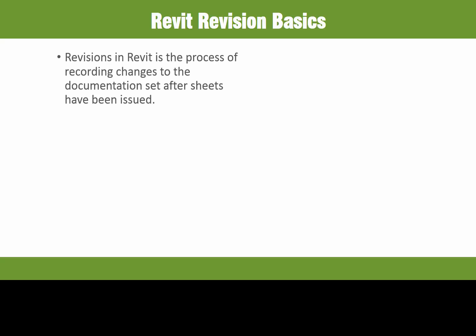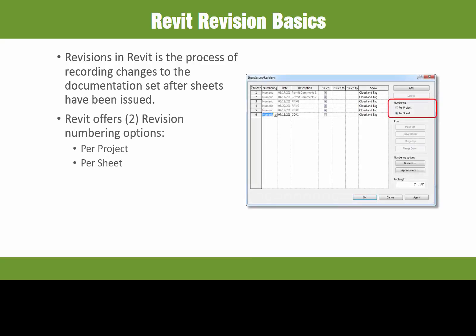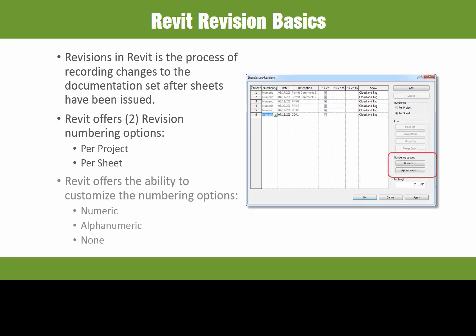Revisions in Revit is the process of recording changes to the documentation set after sheets have been issued. Revisions can be added at any point in time to a Revit model. Revit offers two revision numbering options: revisions per project and revisions per sheet. Revit allows the user to customize the numbering scheme based on the project and owner requirements, such as numeric, alphanumeric, and even no numbering option as well.